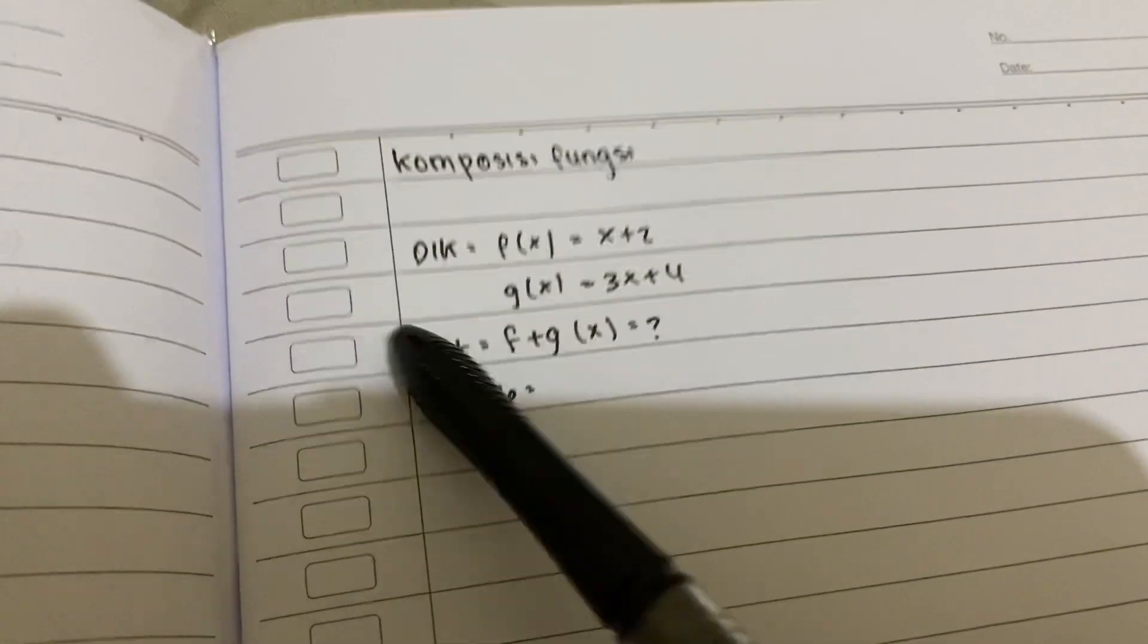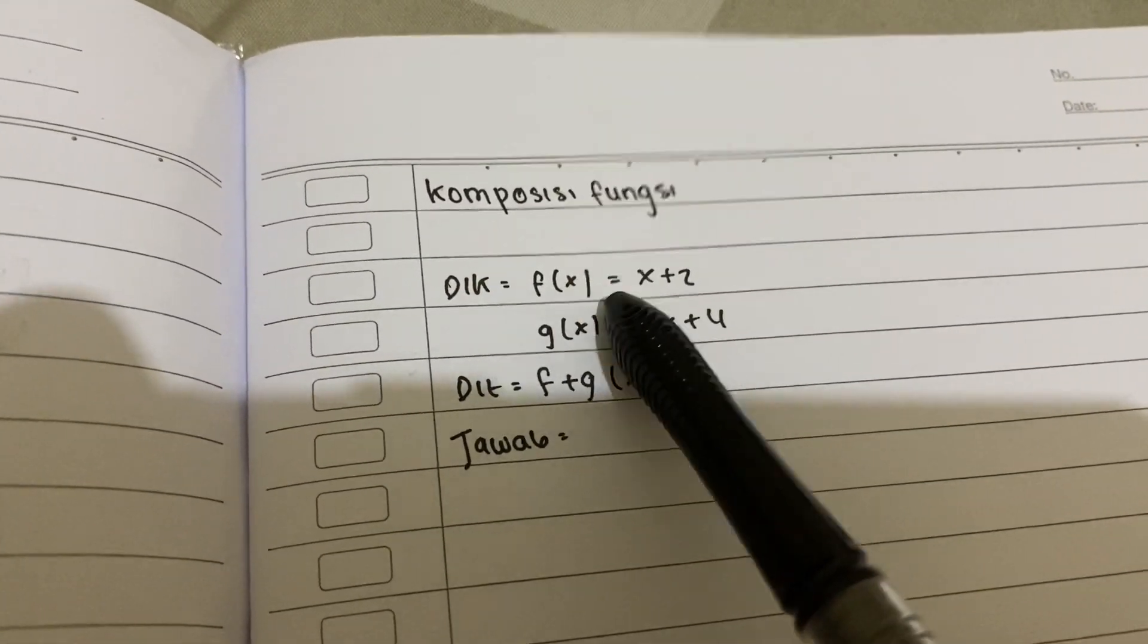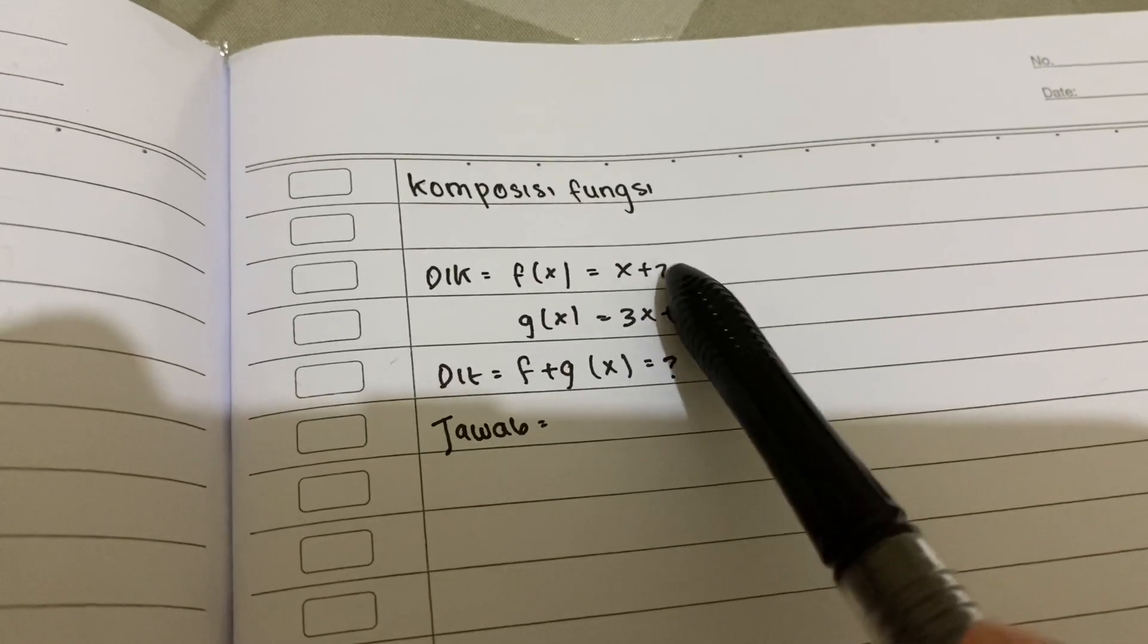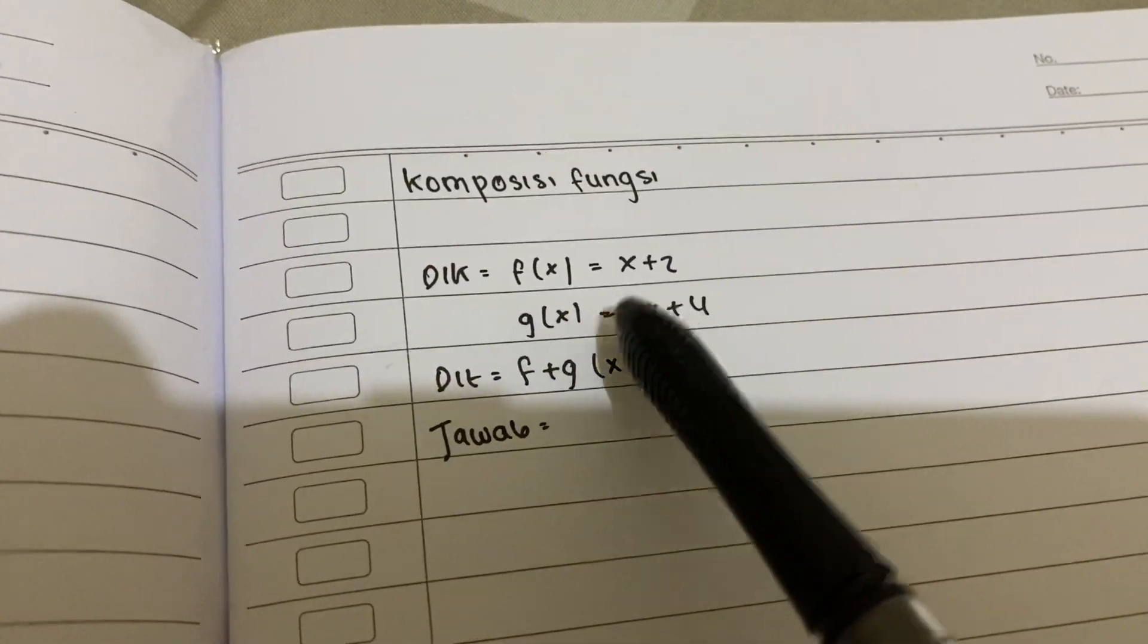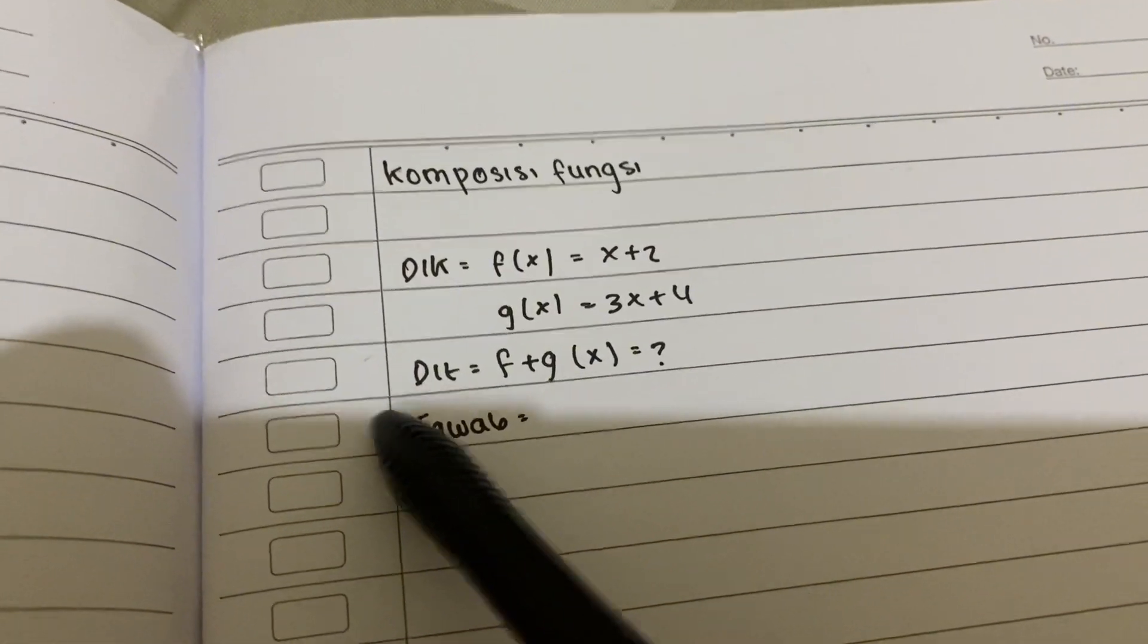Fungsi komposisi jadi fungsi komposisi itu gabungan dari 2 fungsi yaitu fungsi f(x) dan fungsi g(x). Jadi yang pertama kita lihat dulu diketahuinya yaitu f(x) sama dengan x plus 2, g(x) sama dengan 3x plus 4. Terus ditanya itu f plus g(x) sama dengan.